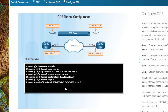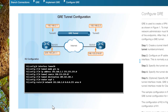On R2, the configuration looks nearly identical — only the source, destination, and tunnel IP address change. The IP address changes to 192.168.2.2, the source becomes R2's interface address, and the destination becomes R1's interface address. Note that tunnel mode GRE IP is actually the default tunnel mode, so that command is technically optional but good practice to include.